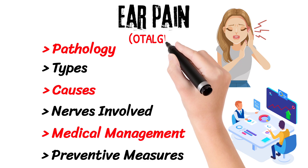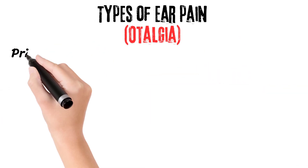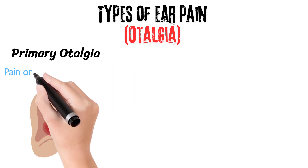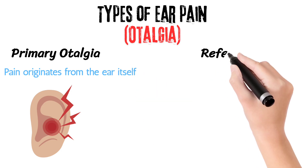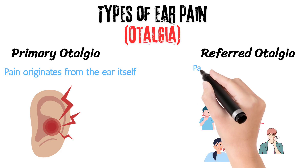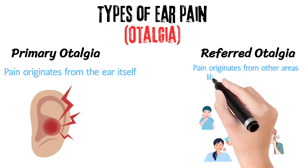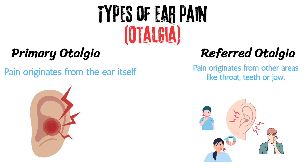Ear pain is also called otalgia. Types of otalgia include primary otalgia, where pain originates from the ear itself, and referred otalgia, where pain is perceived in the ear but originates from other areas like the throat, teeth, or jaw.